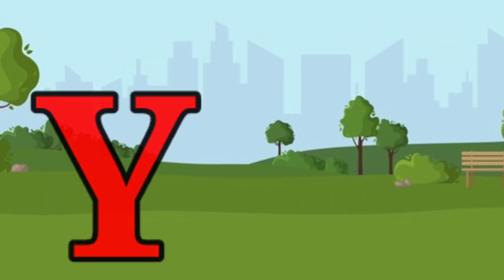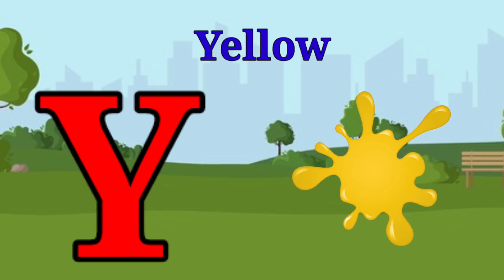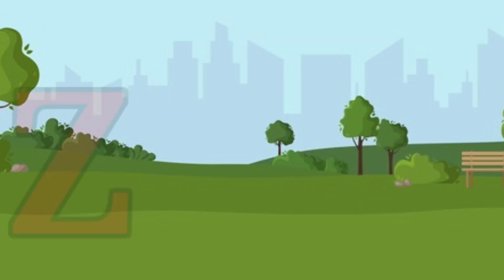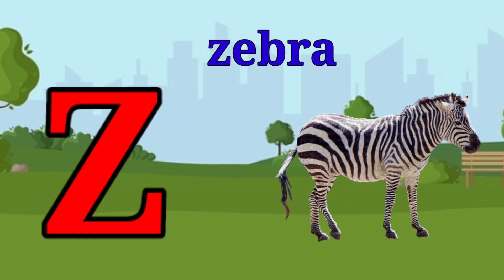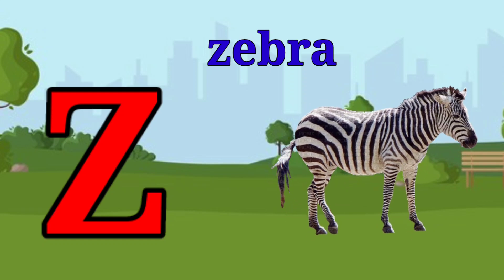Y is for yellow, ye-ye-yellow. Z is for zebra, z-z-zebra.